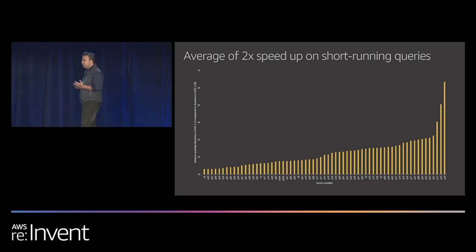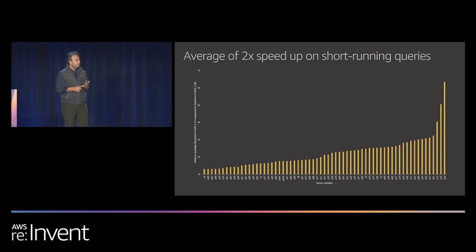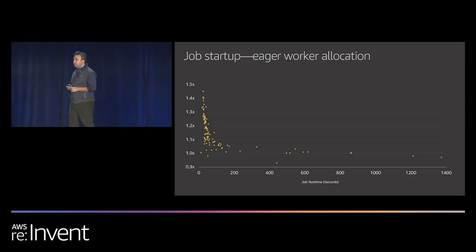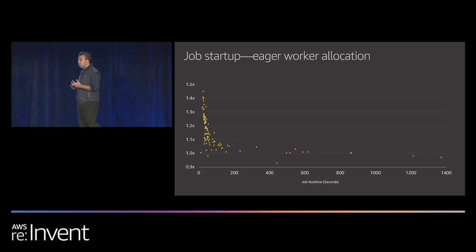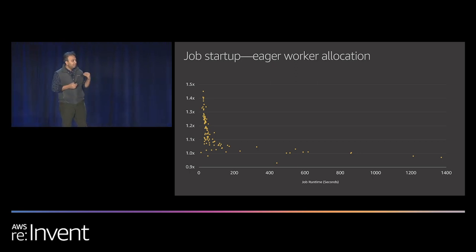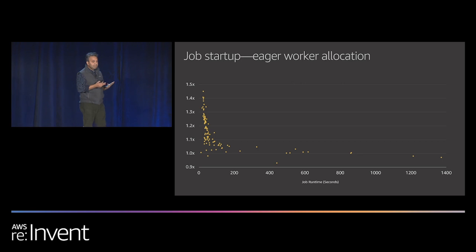All of these improvements are coming from either configuration changes, query planning optimizations, or better ways of running the execution engine on top of EMR. For example, with short-running queries, we learned that Spark's dynamic executor waits until it can compute how many executors it needs before spinning them up, which adds latency for small jobs. So we added a new technique that eagerly allocates executors before the job even starts, which immediately improves performance.